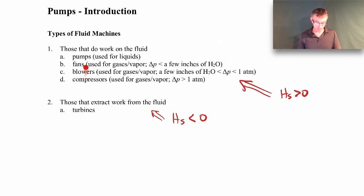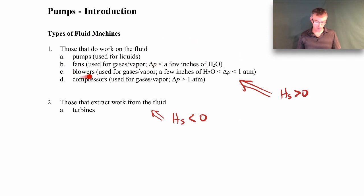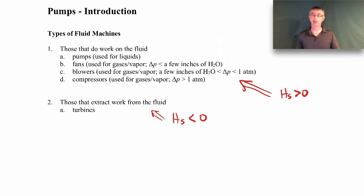There are some terminology differences between these kinds of devices. Pumps are typically used for liquids. Fans are used for gases or vapors at very low pressure changes — meaning a small pressure change across the fan. Blowers have a higher pressure change but are also used for gases and vapors. Compressors are also for gases and vapors but with a larger pressure difference. So fans, blowers, and compressors all operate on gases or vapor, differing mainly in how much pressure rise there is across the device.